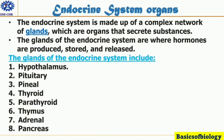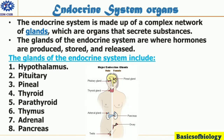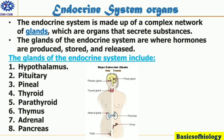The endocrine system is made up of organs called glands. Glands produce and release different hormones that target specific things in your body. You have glands all over your body, including in your neck, brain, and reproductive organs. Some glands are tiny, about the size of a grain of rice or a pea. The largest gland is the pancreas, which is about six inches long.